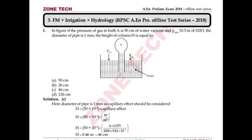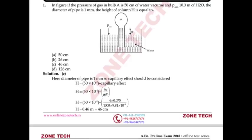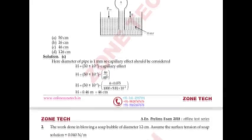Since diameter is 1 mm, we need to consider the capillary effect inside the test tube. The height of column will be: 50 cm vacuum pressure was already there, but we need to subtract the capillary effect. Capillary effect height = 4σ/(ρgd), where σ is surface tension of water = 0.075. When solved, the answer value is 46 cm, so answer is C.